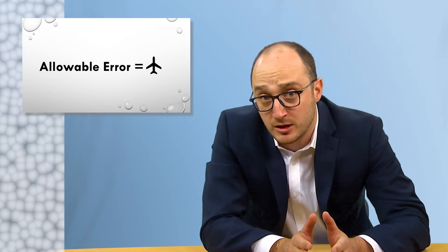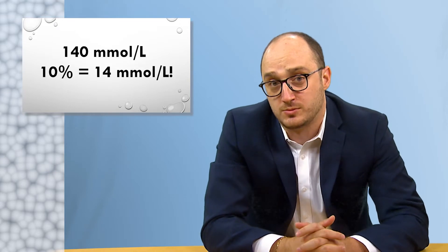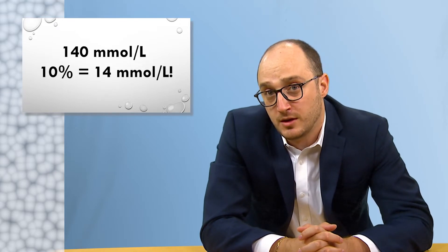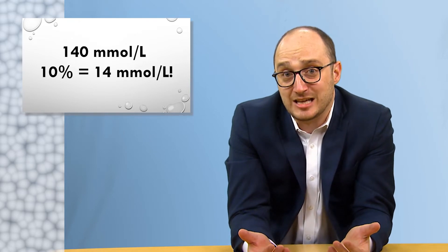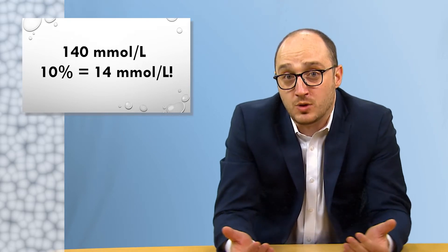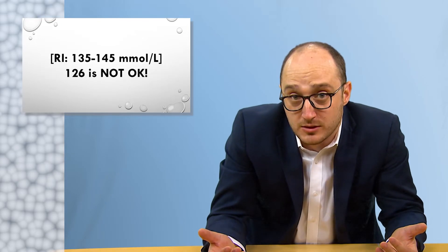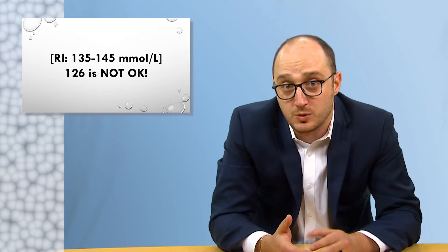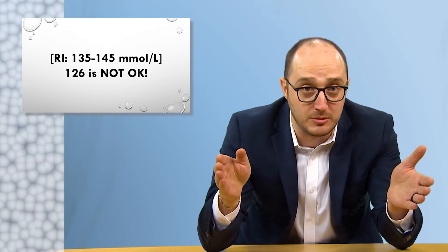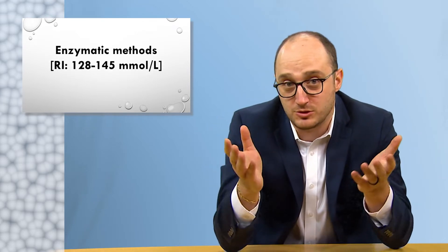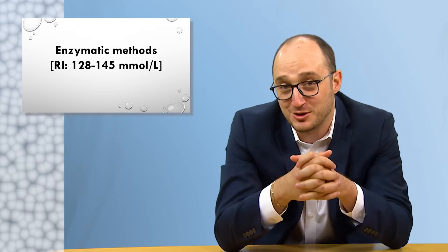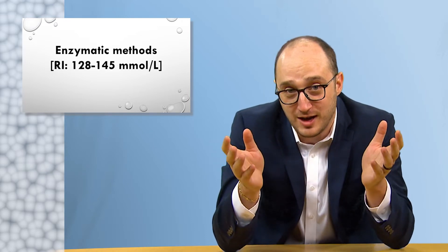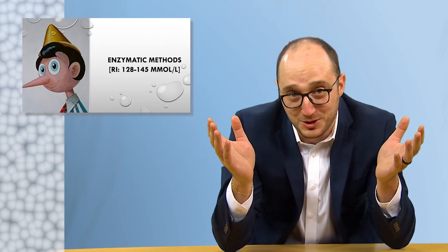10% represents an allowable difference of plus or minus 14 millimoles per liter for plasma sodium. For a patient with a sodium concentration of 140 millimoles per liter, that's saying it's okay if we report down to 126 millimoles per liter — the difference between almost severe hyponatremia and normal natremia. Unless, of course, you're using an enzymatic method to measure sodium, in which case, with a reference interval of 128 to 145, you have other villains to worry about.